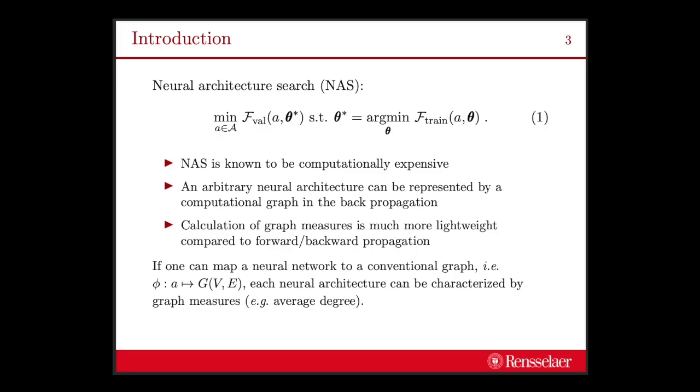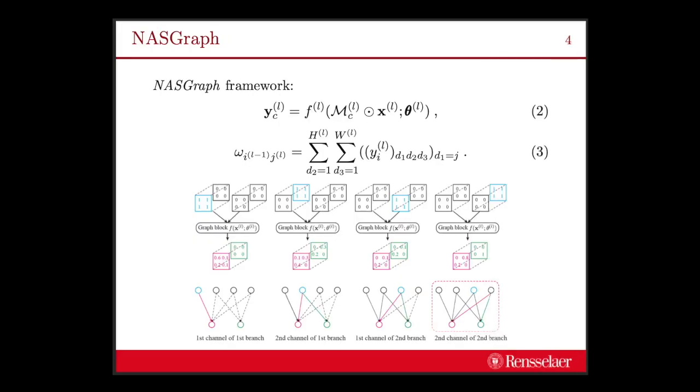We consider three facts. The first fact is that NAS is known to be computationally expensive. The second fact is that an arbitrary neural architecture can be represented by a computational graph in the back propagation process. The third fact is that calculation of graph measures is much more lightweight compared to forward or backward propagation. So based on these three facts, if one can map a neural architecture to a conventional graph, i.e., phi: a maps to G(V, E), then each neural architecture can be characterized by graph measures, for example, average degree. Based on that, we propose a framework named NAS graph.